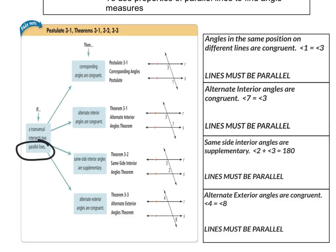Alternate interior angles: if the transversal intersects two parallel lines, then alternate interior angles are also congruent. In this picture, angle three and angle seven would be exactly the same measure. Alternate interior angles are congruent, but the lines must be parallel to each other — otherwise, this would not be true.